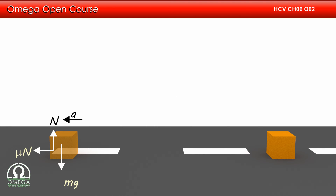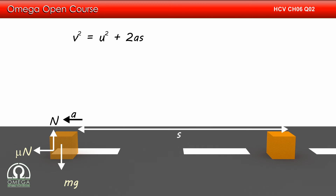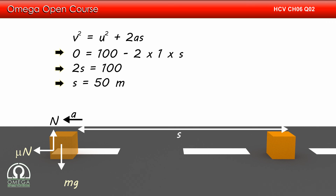From Newton's equations of motion, we have v² = u² + 2as. Since the acceleration in this case is opposite to the direction of motion, the acceleration is negative. Also, since the block is to stop at the end, its final velocity is 0. Putting the values, we get 0 is equal to 100 minus 2 into 1 into s, or 2s is equal to 100, or s is equal to 50 meters.